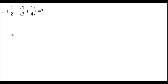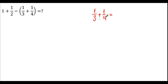Let's start with this example. We have a bracket here, so the first thing we have to do is solve the bracket: 1 over 3 plus 1 over 4. I have to make the denominators equal, so I need to find the LCM of 3 and 4. The LCM of 3 and 4 is 12.